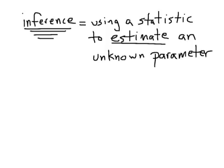That idea leads to the term inference, which is really the big topic of the entire second semester. Inference is using a statistic to estimate an unknown parameter. We have no way of actually knowing the average height of all people in the world, so we take a sample, calculate the sample mean — that's a statistic — and reason that it's relatively close to the unknown parameter. Using a statistic from a sample to estimate an unknown parameter from a population is really the big idea of the second semester.